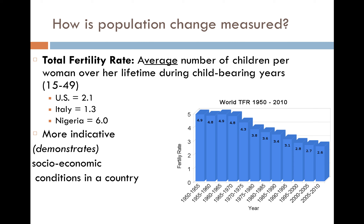In the U.S., the total fertility rate is 2.1 — you can't have 0.1 children, of course, but this is an average. Italy's is 1.3. Looking at total fertility rate is a good indication of how a population is changing over time. If two people are only bearing 1.3 children on average, that means the population is decreasing. In the U.S., based on a TFR of 2.1, the population is generally being maintained.